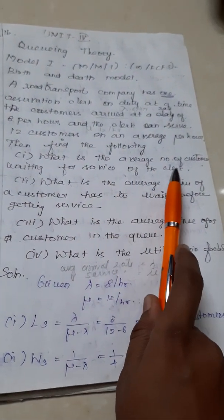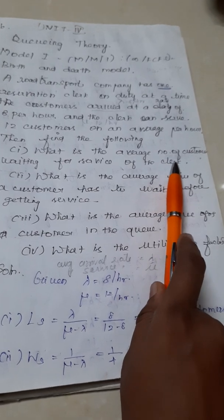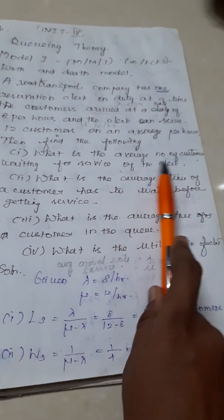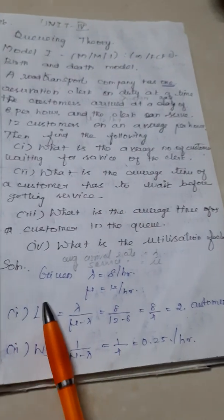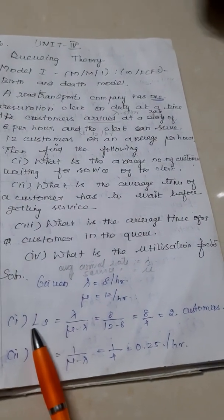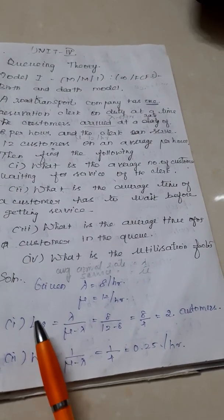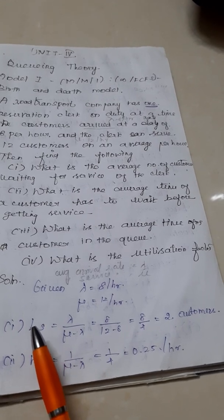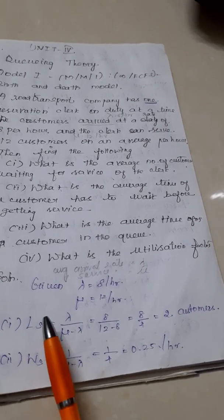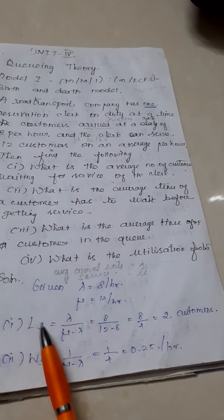So here they say number of customers waiting for service of the clerk, service counter. So number of customers including the counter, service counter, that means length of the system. Number of customers waiting including the person in the service counter, we call length of the system.